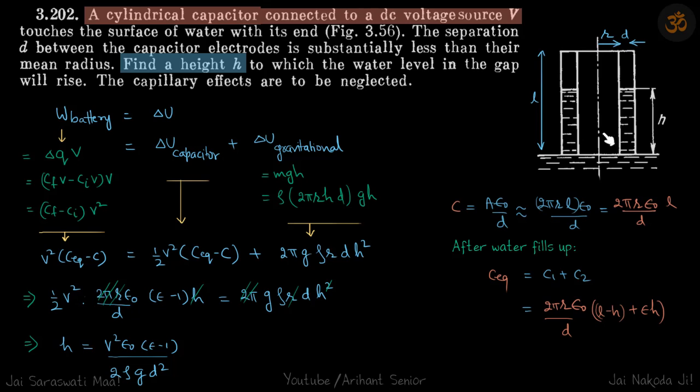It will be C1 plus C2. The water filled height is H and the height without water is L minus H. So C1 plus C2 becomes 2 pi r epsilon0 by d times (L minus H) plus epsilon H.